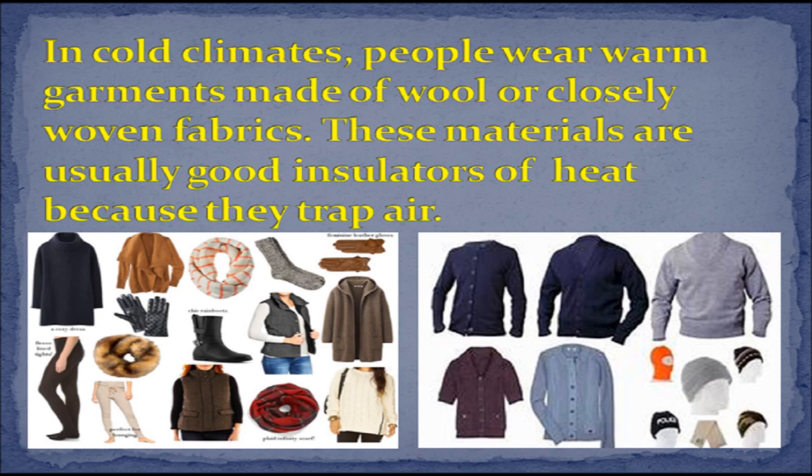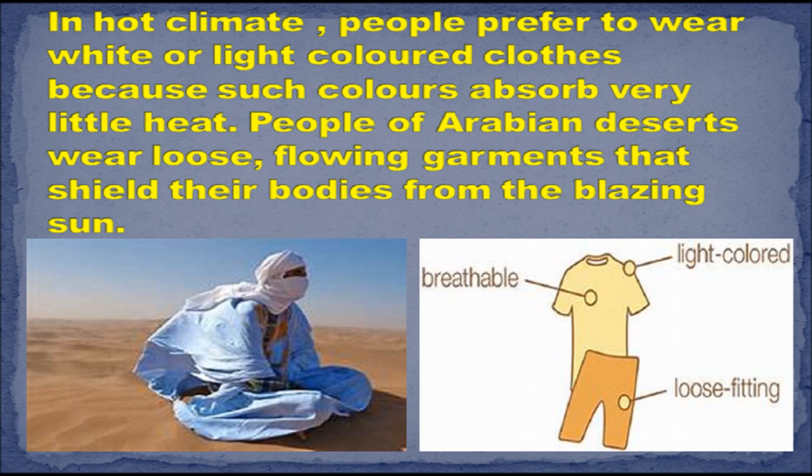In hot climates, people prefer to wear white or light-colored clothes because such colors absorb very little heat. People of the Arabian Desert wear loose, flowing garments that shield their bodies from the blazing sun. The same garments protect them against the cold night air.